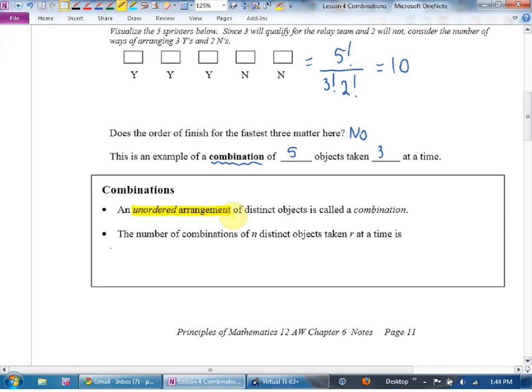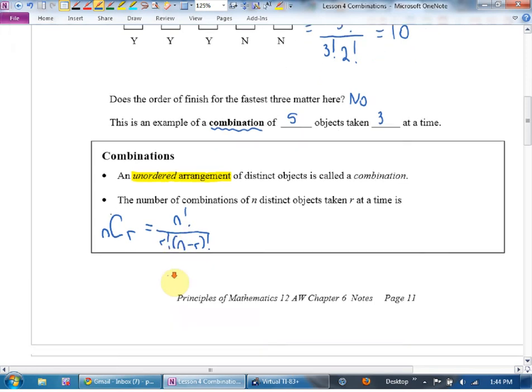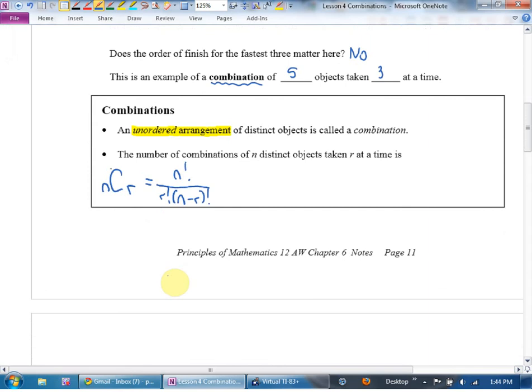An unordered arrangement of distinct objects is called a combination. And the number of combinations of n distinct objects taken r at a time? We write it as nCr for choose or combination. And it's n factorial all over n minus r factorial, that's the permutation part, times r factorial in the front on the bottom. It's n factorial over r factorial bracket n minus r factorial. And if you look on the inside cover of your workbook, that also is on your formula sheet.